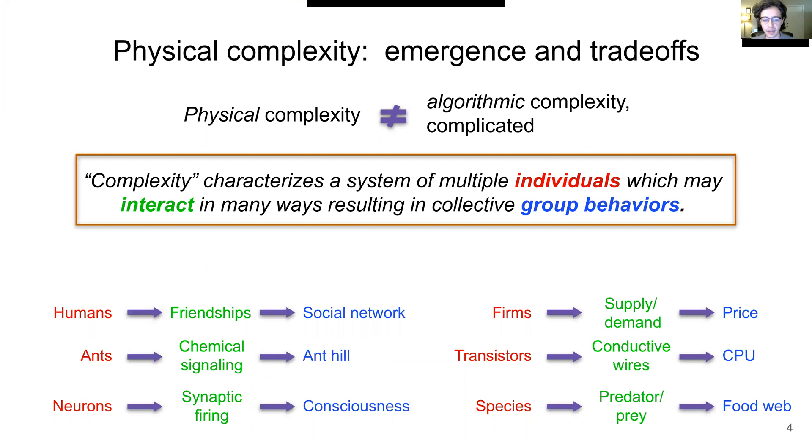One can think of many examples which fall into this paradigm. For example, humans could be the individuals, friendships make up their interactions, and their group behaviors are encoded on the social network. Another example comes from engineering, where transistors could be the individuals, conductive wires make up their interactions, and the collective group behaviors could be a CPU. An important feature of complex systems is that they balance trade-offs, for example, between generality and specificity, robustness and fragility, or activity and stasis.